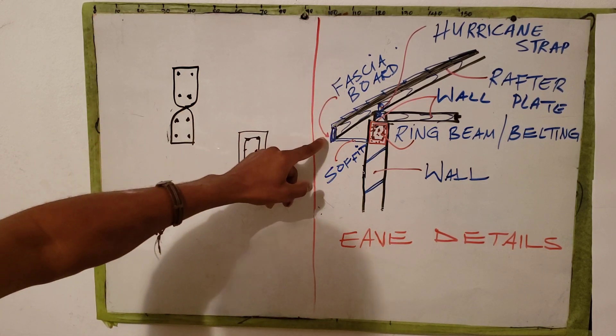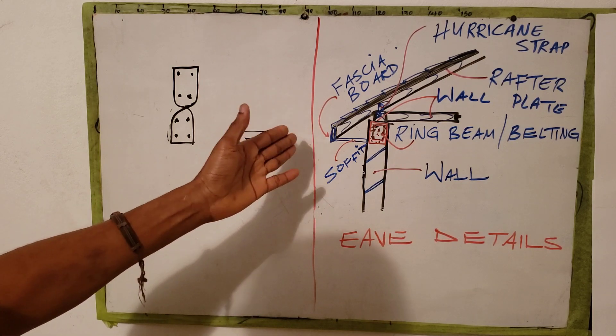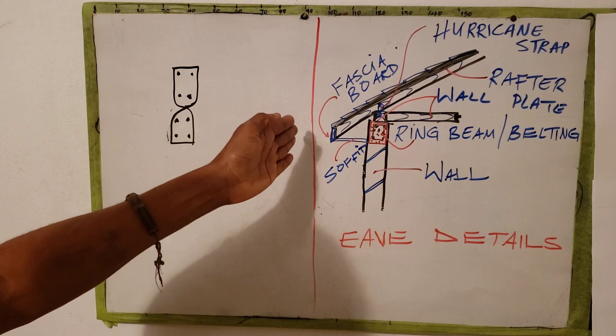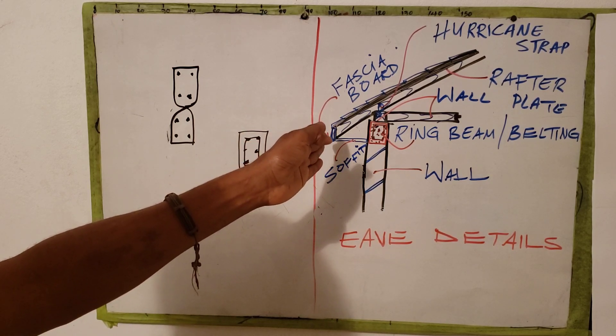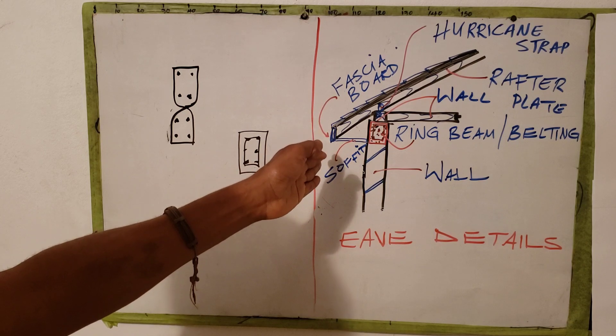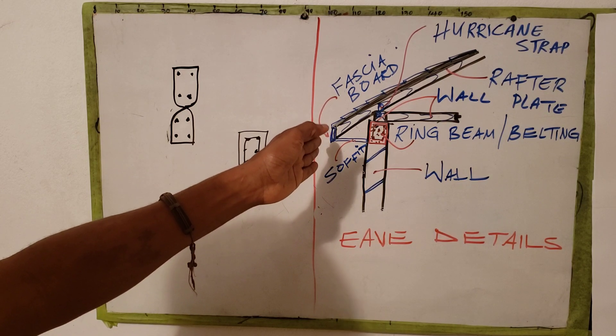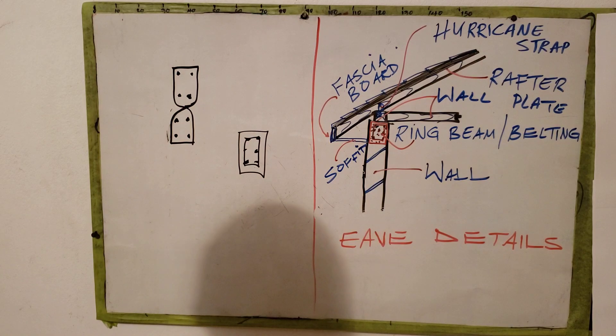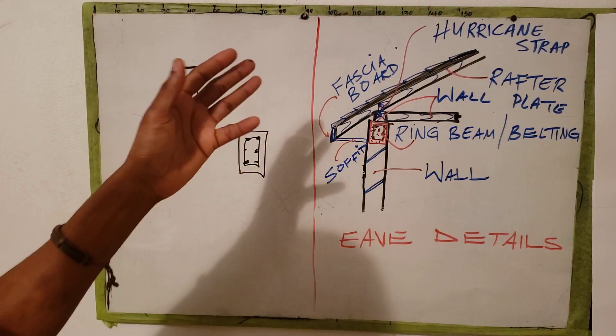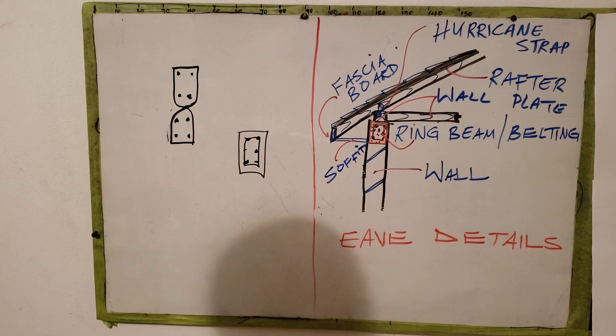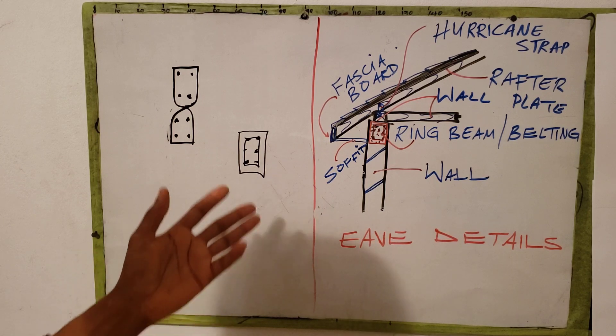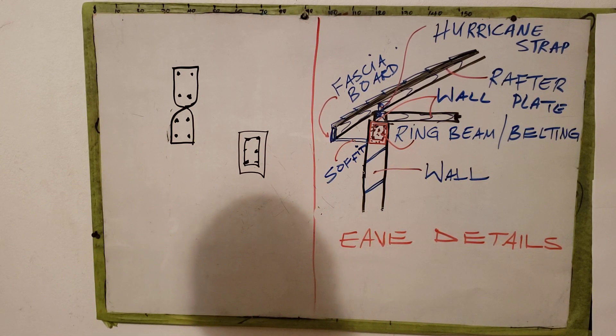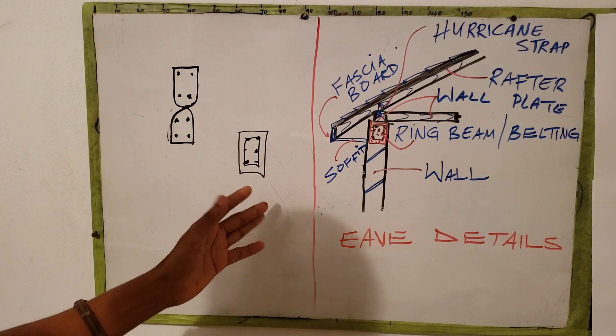Next is our fascia board. The fascia board is a piece of board that covers the edges of the rafter. It is typically underneath the roofing material. It covers the edge of the rafters, and the fascia board dimension ranges from 225 millimeters to 25 millimeters thick. This varies depending on the question.